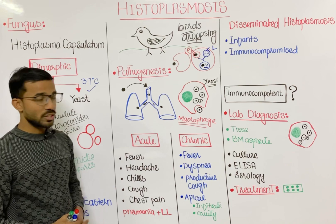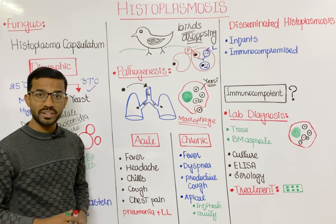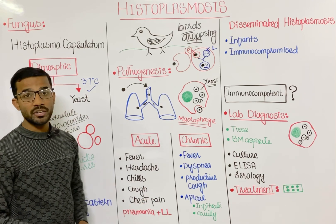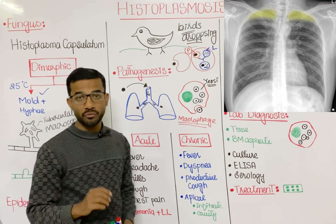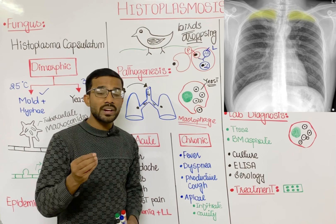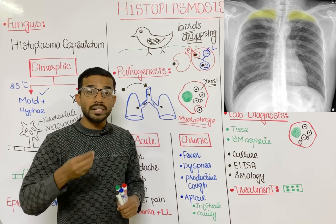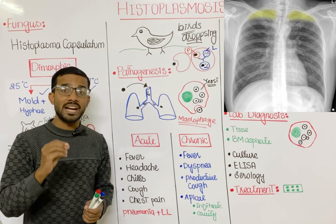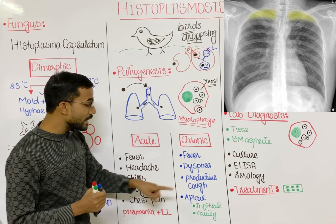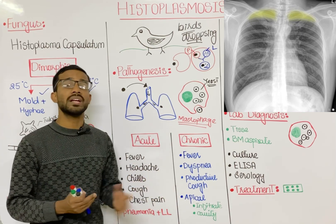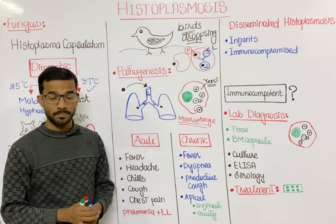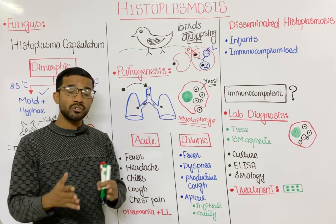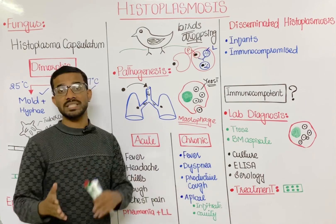In the chronic form, symptoms include fever, dyspnea (difficulty breathing), and productive cough with mucus. You will also see apical infiltrates and cavities on the apical side of the lungs detectable on chest X-ray. An important point is that this presentation can be confused with tuberculosis, so you must differentiate between histoplasmosis and TB.